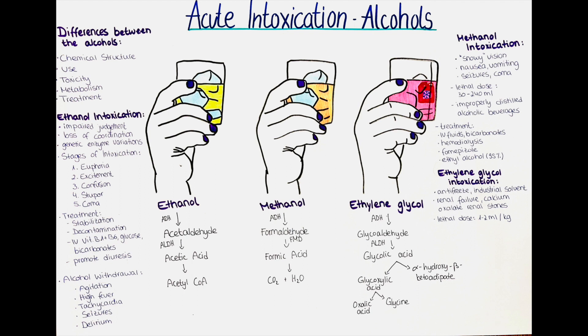Ethanol intoxication occurs in several stages, each with its own characteristic symptoms and effects on the body. These stages can vary depending on the individual, the amount consumed and the rate of consumption. The first stage is euphoria: at low levels of ethanol consumption, the person may feel more sociable, talkative and relaxed. The second stage is excitement: as ethanol consumption increases, the person may become more excited, restless and less inhibited, with impaired judgment and coordination, and difficulty with fine motor tasks such as driving or writing.